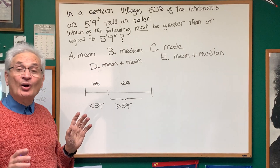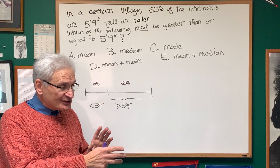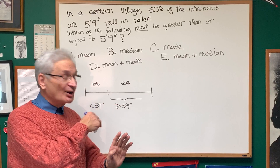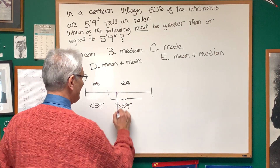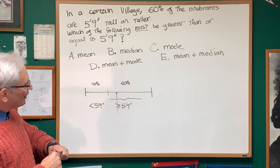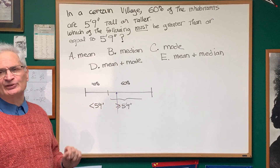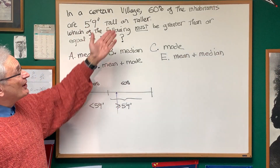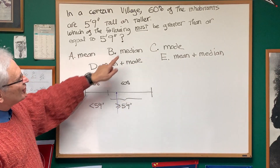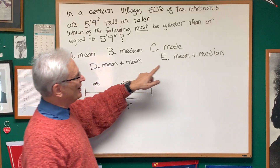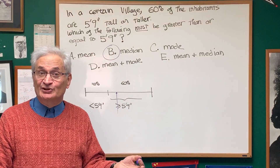Let's look at the median. The definition of the median is the number that's right in the middle of the data set. When the data set is put in order, there are as many scores above the median as there are below the median. Where would the median be in this distribution? It would be somewhere around the 50% mark. If we look at the 50% mark, we are guaranteed that that mark has to be greater than or equal to 5 foot 9, by the description of the population in the original problem. So our answer is the median — it can't be the mean, it can't be the mode, and our choice is choice B.